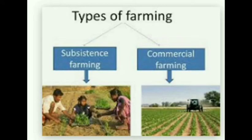The first factor is geographical conditions — in which country, what the geography is, what the climate is, what the land is. Farming depends upon these geographical factors.